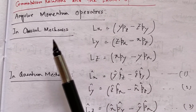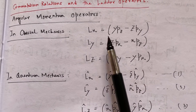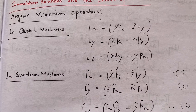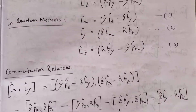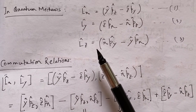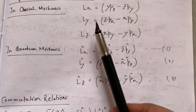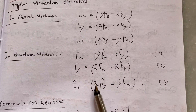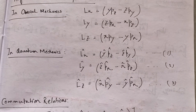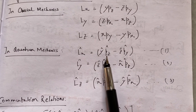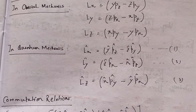Angular momentum in classical mechanics is defined in a standard way. These are not operators in classical mechanics and are simultaneously computable — meaning I can simultaneously calculate LX, LY, and LZ in classical mechanics. But in quantum mechanics, the dynamical variables are represented by operators, so I write LX cap, LY cap, LZ cap instead. Since position and momentum are dynamical variables that change with time and represent physical quantities, angular momentum must also be written in terms of operators. These are my angular momentum operators in quantum mechanics.